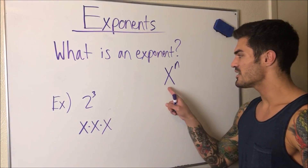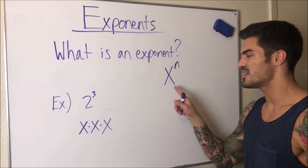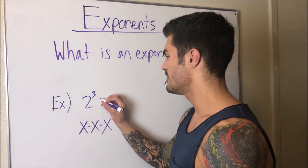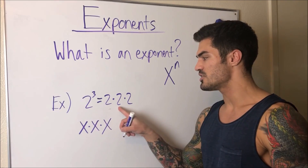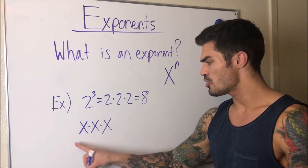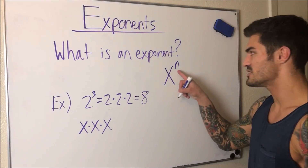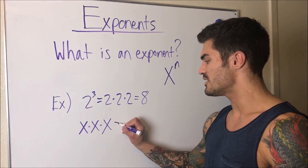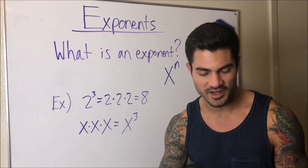What an exponent means is X — or two in this case — multiplied by itself n times. So for 2 to the third, that's two times two times two, multiplied by itself three times, which gives us eight. Similarly, if we see X multiplied by itself three times, we can rewrite that as X to the third power. That's a general introduction.